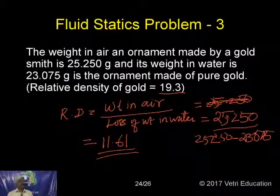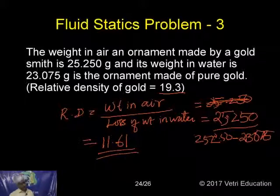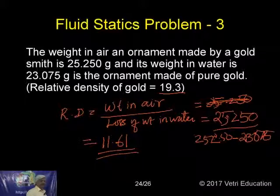To find pure gold, we calculate the relative density. The formula is: weight in air divided by loss of weight in water, or density of solid divided by density of water — there are three formulas for relative density. From this problem, the gold is not pure because we get 11.61, whereas the given value is 19.3; therefore the gold is not pure.